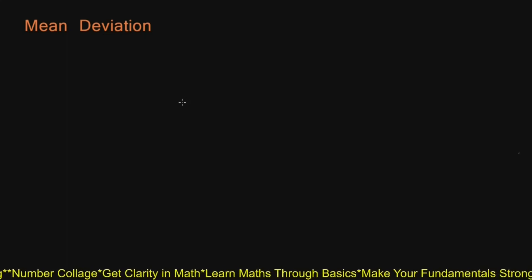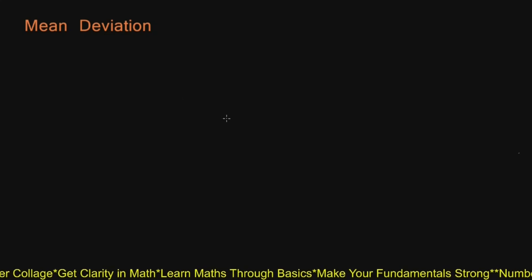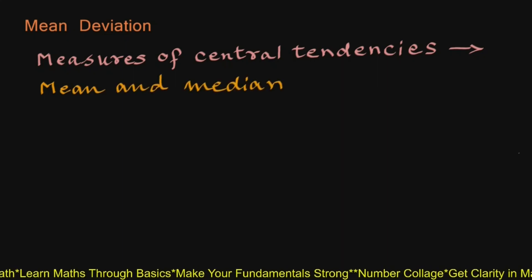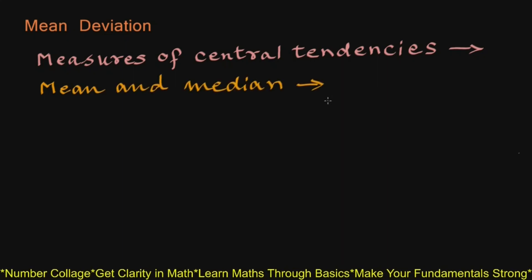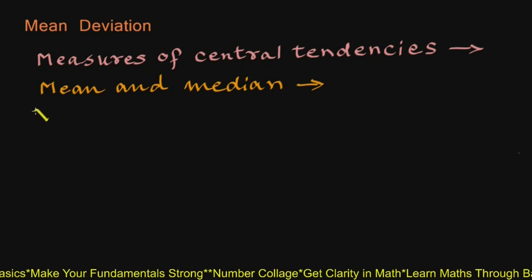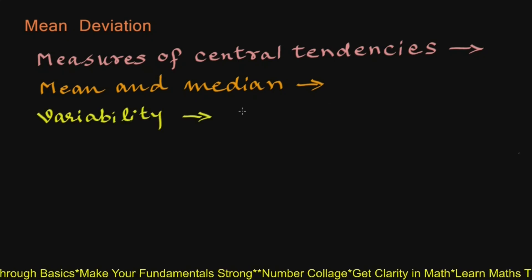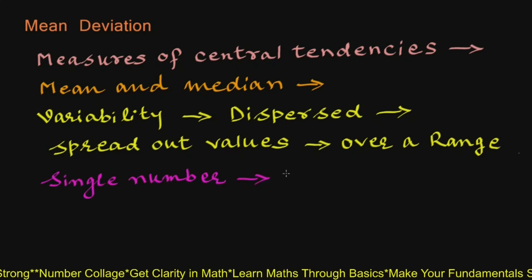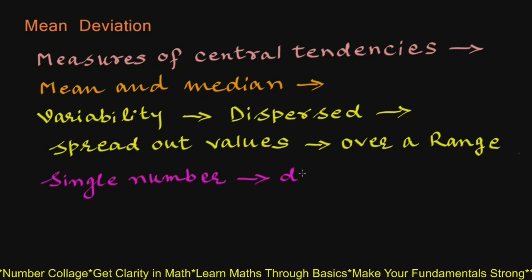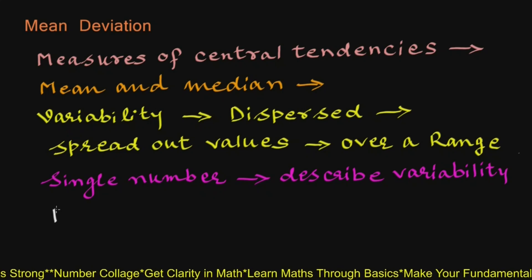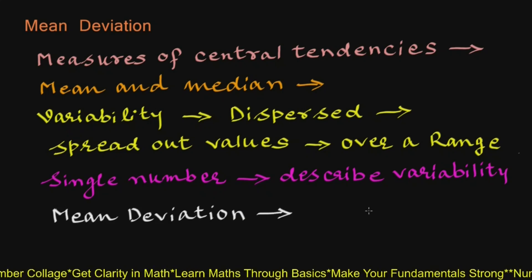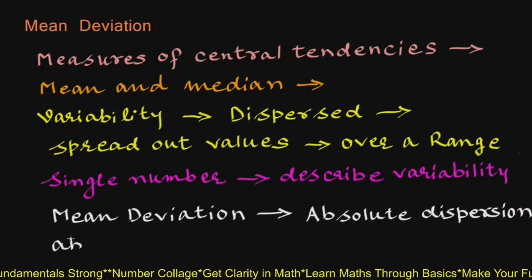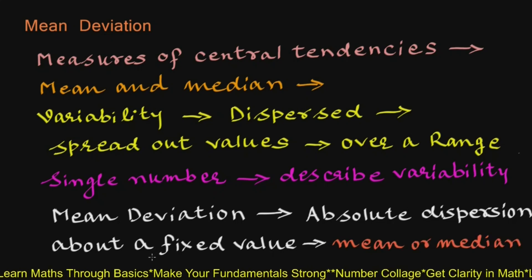In this video we are going to study mean deviation. Measures of central tendencies such as mean and median are not sufficient to give complete information about given data. There is variability in data due to dispersed or spread out values over a range. We need a single number to describe this variability. This can be achieved by finding mean deviation, in which we measure absolute dispersion or spread of values about a fixed value — mean or median.